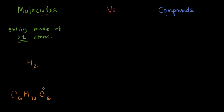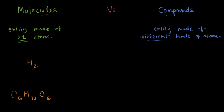Now, what about compounds? Compounds are entities made of different kinds of atoms — that is the key distinction. Molecules just need more than one atom, but compounds must have different kinds of atoms.